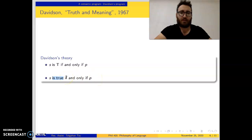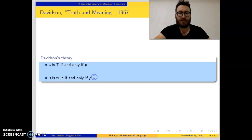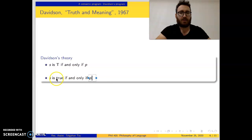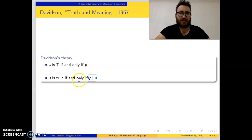In Davidson's approach, we understand meaning through truth — we use the concept of truth to understand meaning. As you see in this meaning-specifying theorem, there is no mention of meaning. Rather, we have: 'snow is white' is true if and only if snow is white. This general schema is called Convention T.